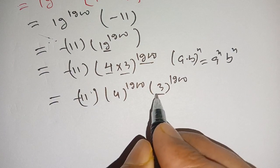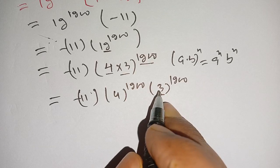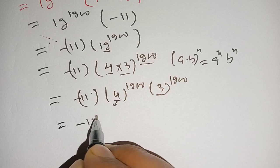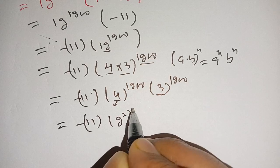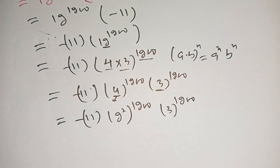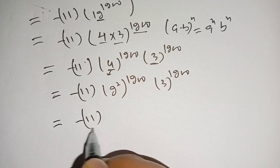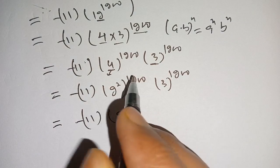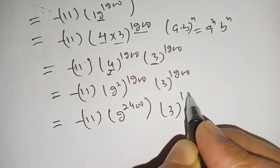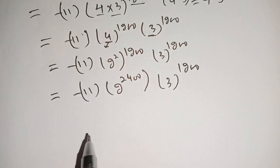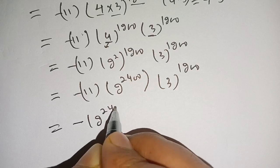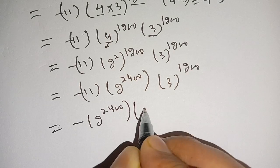Now 4 can be written as 2 power 2, so 4 power 1200 equals 2 power 2 whole power 1200, which equals 2 power 2400. Therefore the expression becomes minus 11 times 2 power 2400 times 3 power 1200.